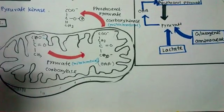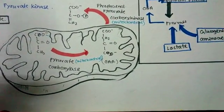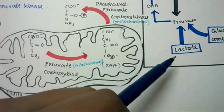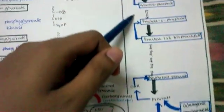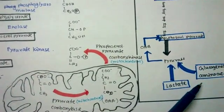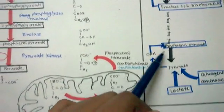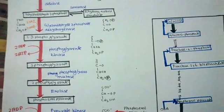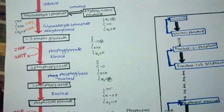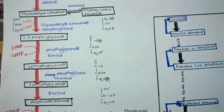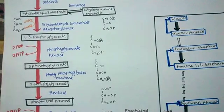Why do we need gluconeogenesis? When body glucose levels are low, glucose must be made from other sources. For example, in muscle, lactate is produced due to anaerobic respiration — this lactate can be converted into pyruvate, which is then converted into glucose. Additionally, glucogenic amino acids such as alanine can ultimately be converted to pyruvate and lead to glucose formation. The body maintains a balance between gluconeogenesis and glycolysis: insulin is a hormone that prevents gluconeogenesis, while glucagon promotes it.